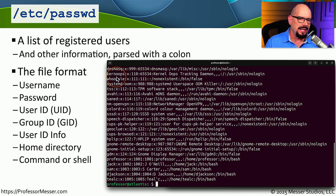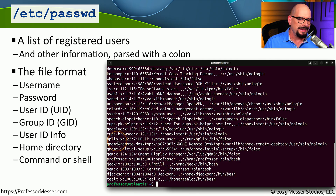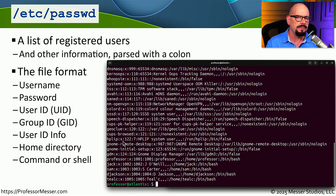The first item on each line is the username — you'll notice system usernames at the top, and users like Professor, Jack, and Sam near the bottom. The second item on each line is the letter X, which is where the password would normally go. You'll notice your password file has X's where the password would normally be.